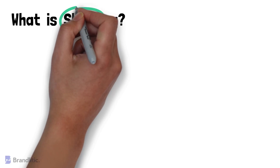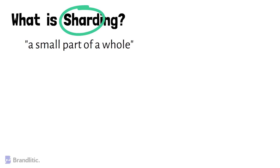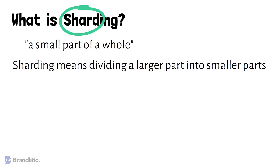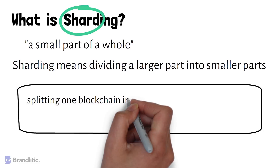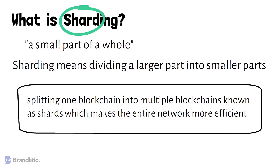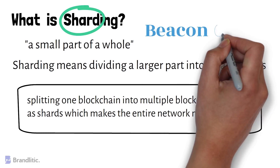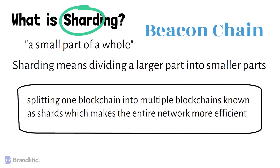Next, let's discuss what is Sharding. The word shard means a small part of a whole, hence sharding means dividing a larger part into smaller parts. In blockchain, the sharding technique is used to achieve scalability within the network. It is the process of splitting one blockchain into multiple blockchains known as shards, which makes the entire network more efficient, as a single validator does not have to handle the workload alone — every validator maintains information related to their respective shards. These validators are also occasionally shuffled between shards to avoid any kind of manipulation, and the beacon chain is used for the communication and coordination of these shards.